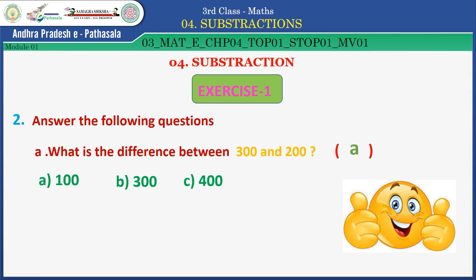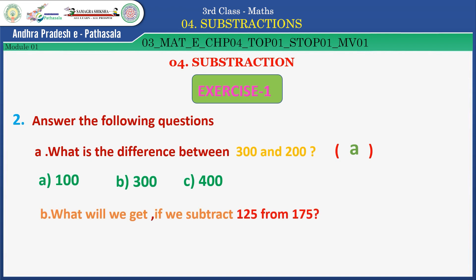Next question B: what will we get if we subtract 125 from 175? Option A: 40. Option B: 50. Option C: 25. Think and say the correct answer. The answer is B — 50. Super, children, keep it up.